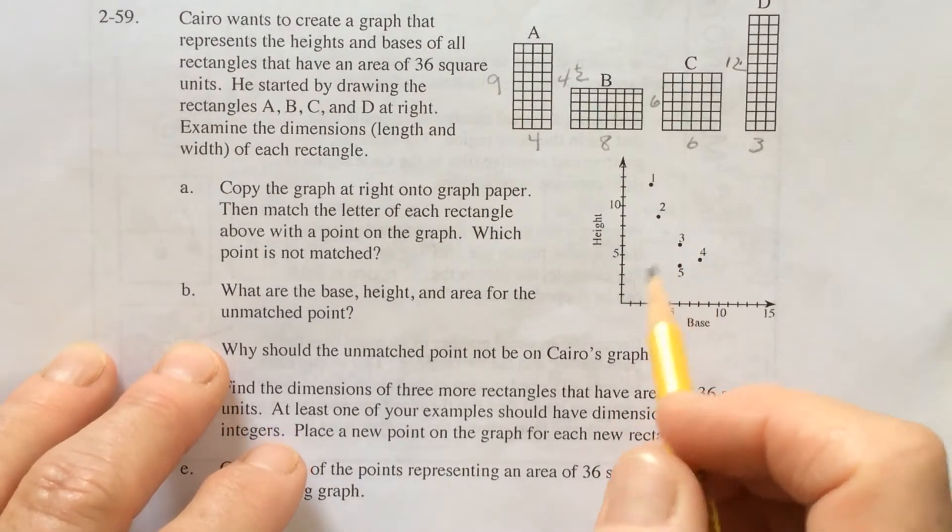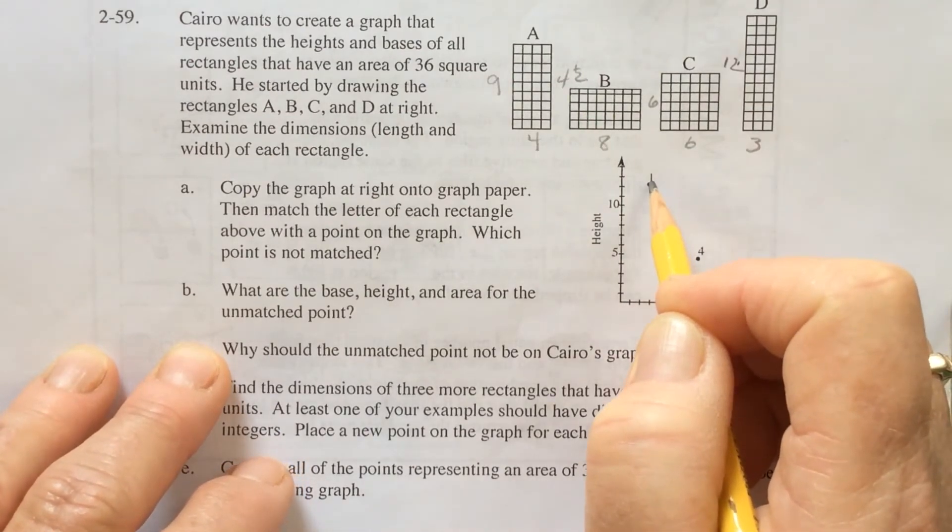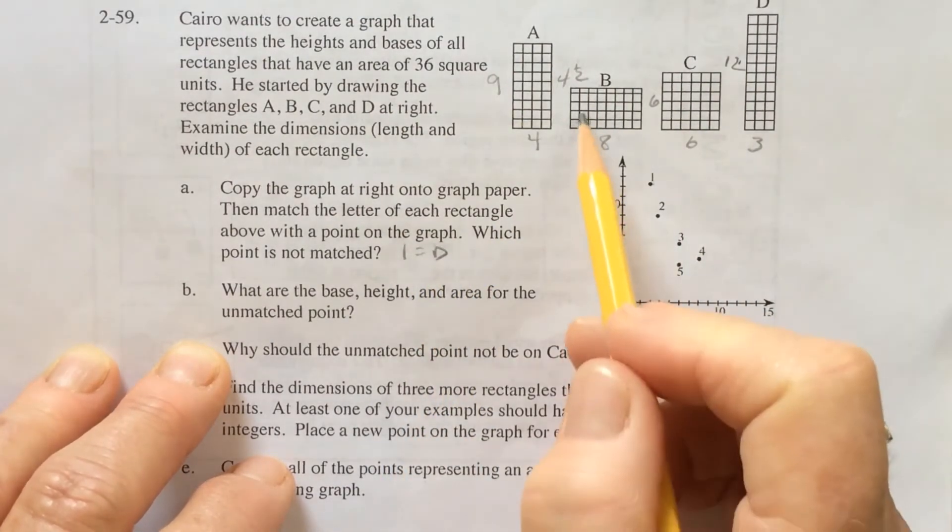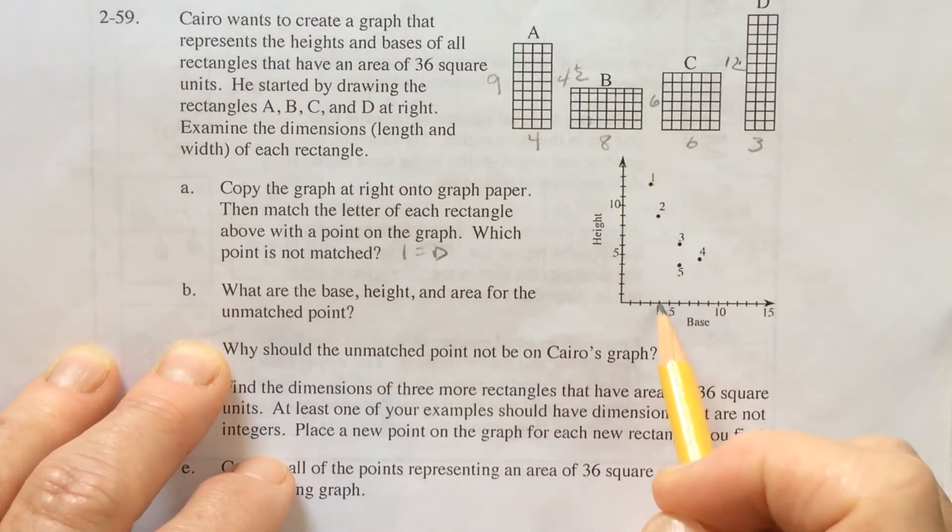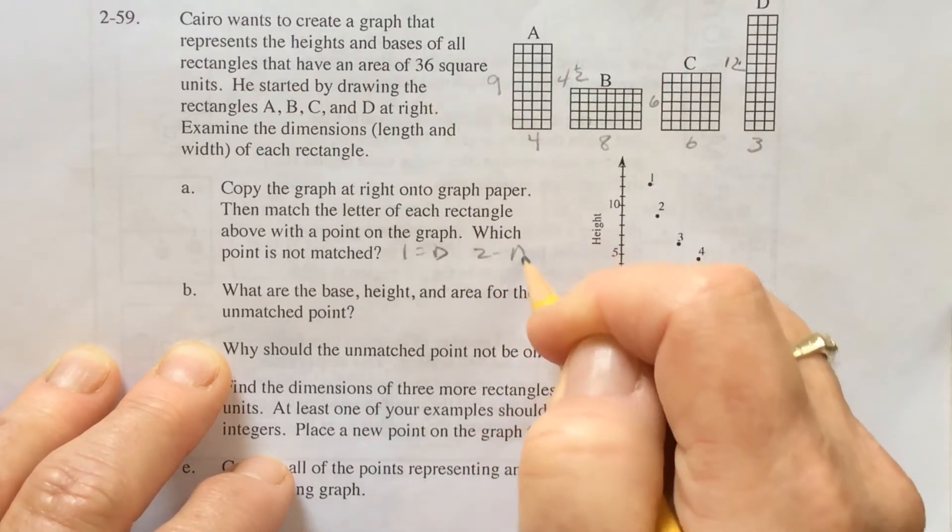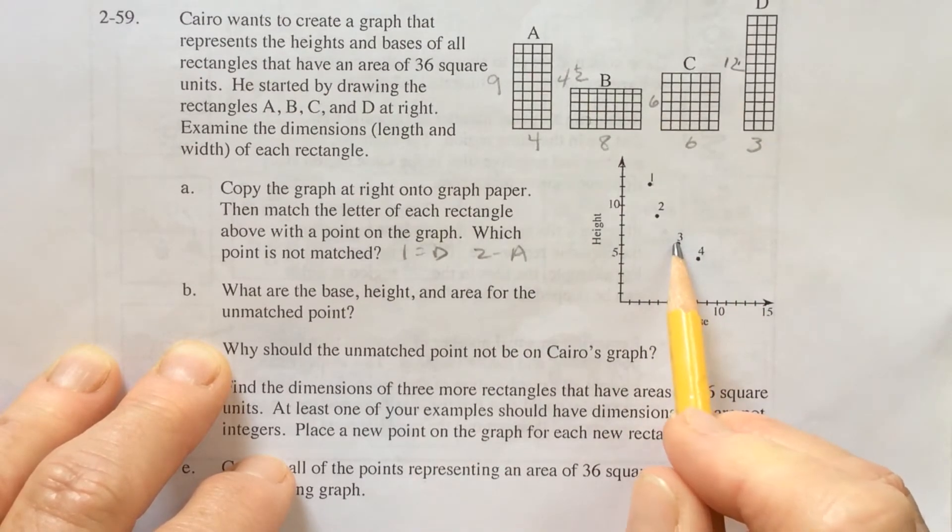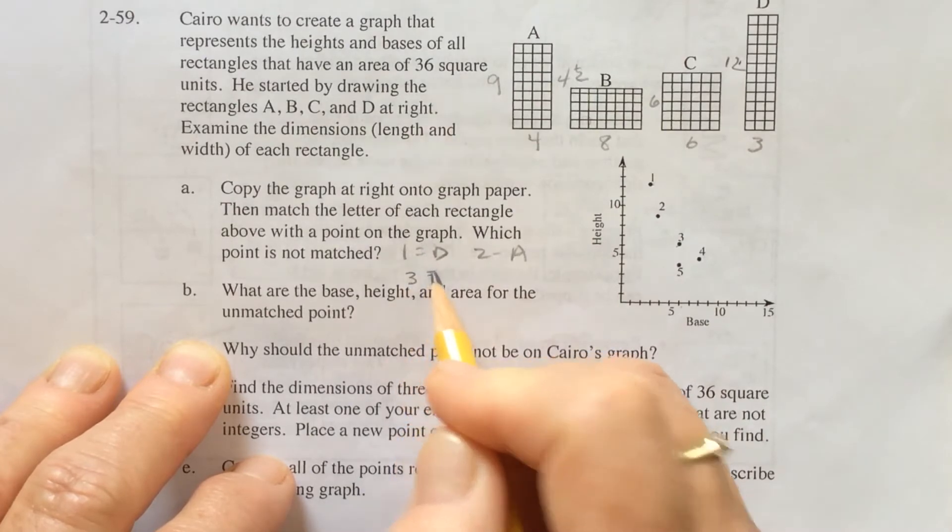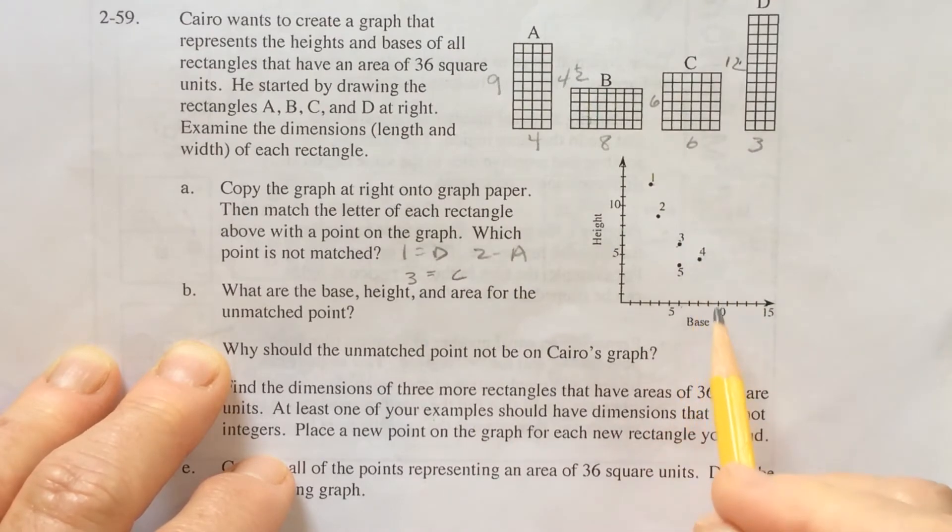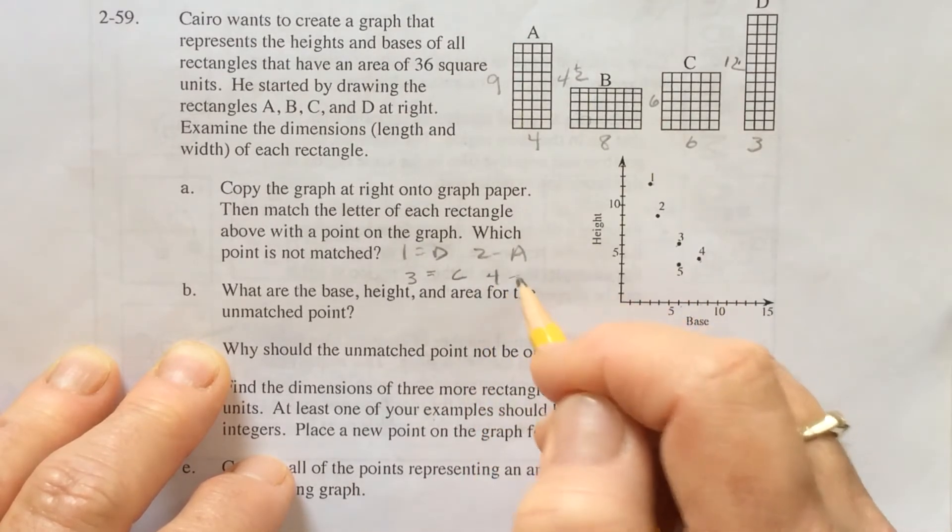So let's take a look at the graph. This one looks like it's 3 by 12, so that would be point D. This one is 4 by 9, so that is point A. This one is 6 by 6, so that is C. And this one is 8 by 4 and a half, and that is B.